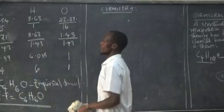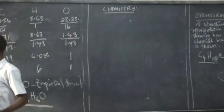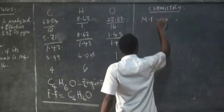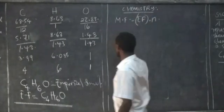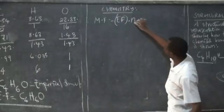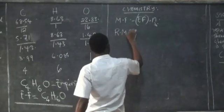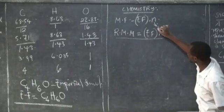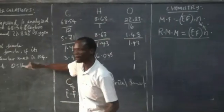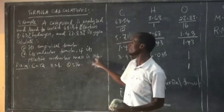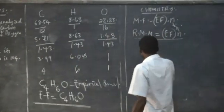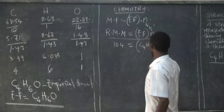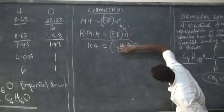That is what we call the empirical formula. Now let us find the molecular formula. The key point to remember is: the molecular formula equals the empirical formula times N. We also have: the relative molecular mass equals the empirical formula mass times N. From this, we can determine the value of N. The relative molecular mass is given as 104.